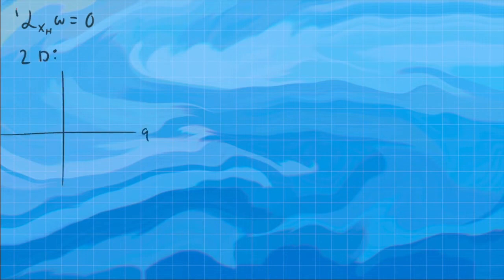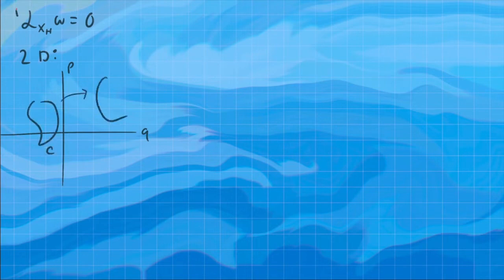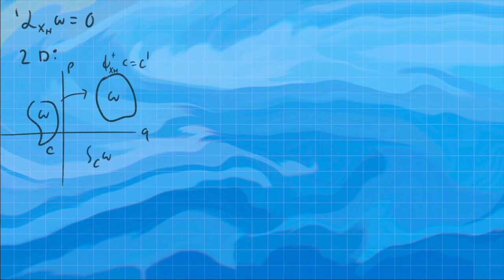We have this fact that for any Hamiltonian vector field, the Lie derivative of the symplectic form is zero. Who cares? Well, let's do an example. So let's look at this in 2D. So we have two coordinates, a Q coordinate and a P coordinate. And what we are saying is that over any region C, if we advect that region by XH, so then we get the flow of the region, then if we integrate omega over this and this, it's going to be equal.